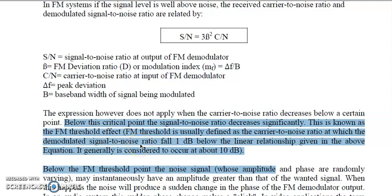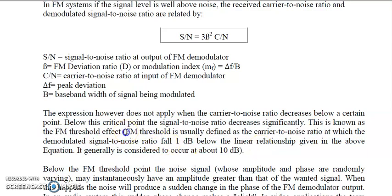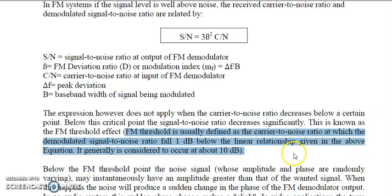The meaning of threshold is that before or after the threshold point, there will be a drastic change in the nature of the output. FM threshold is defined as the carrier-to-noise ratio at which the signal-to-noise ratio falls below the linear relationship given by the equation S/N = 3 beta squared × C/N. Below a critical point, the signal-to-noise ratio will fall 1 dB below this linear relationship.